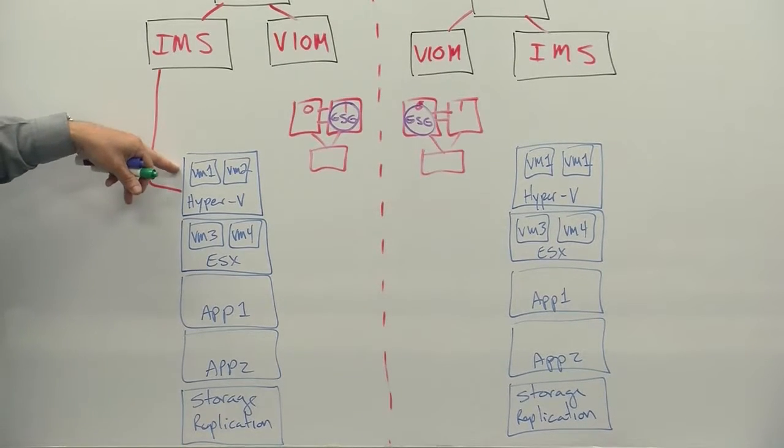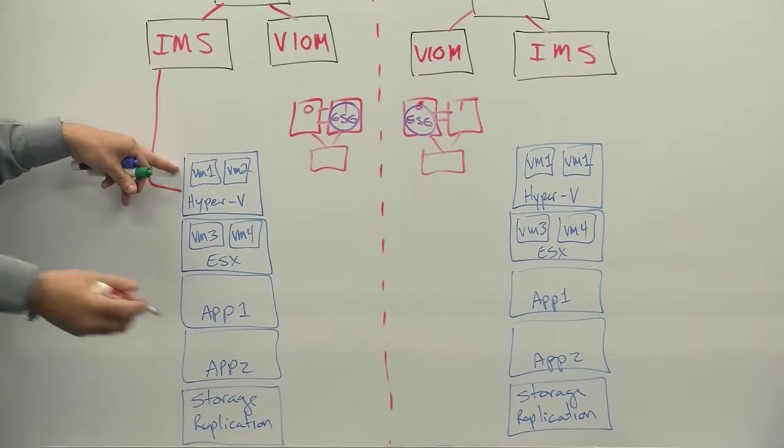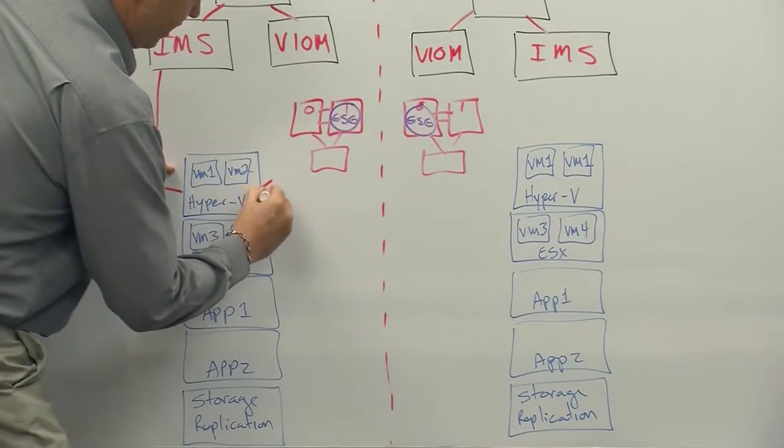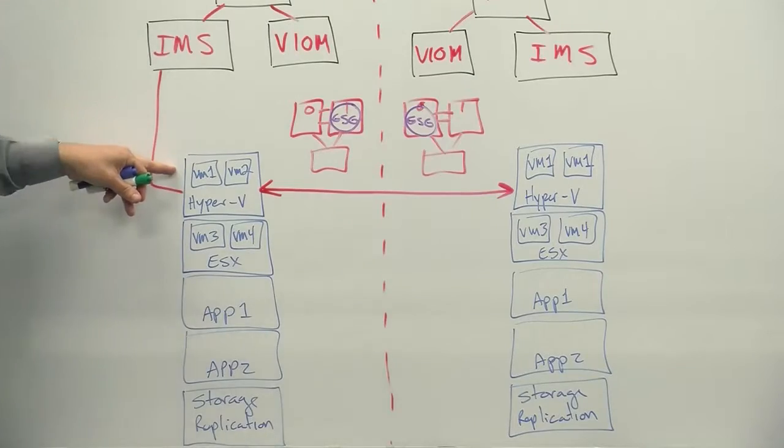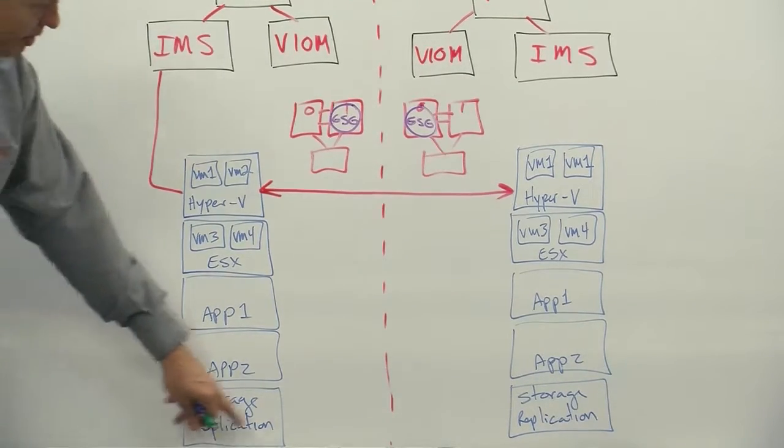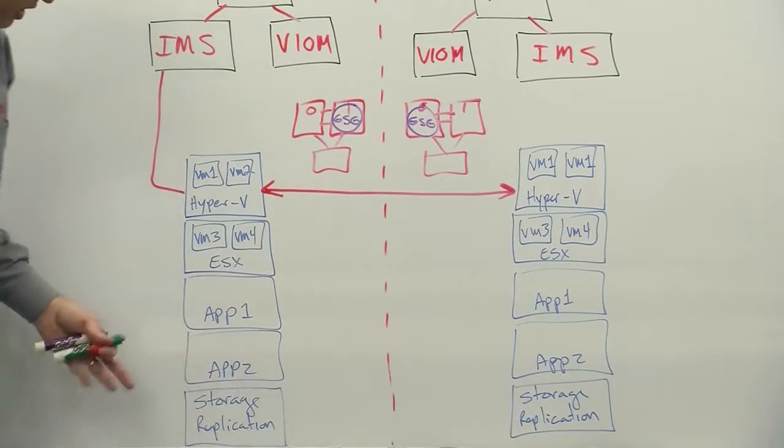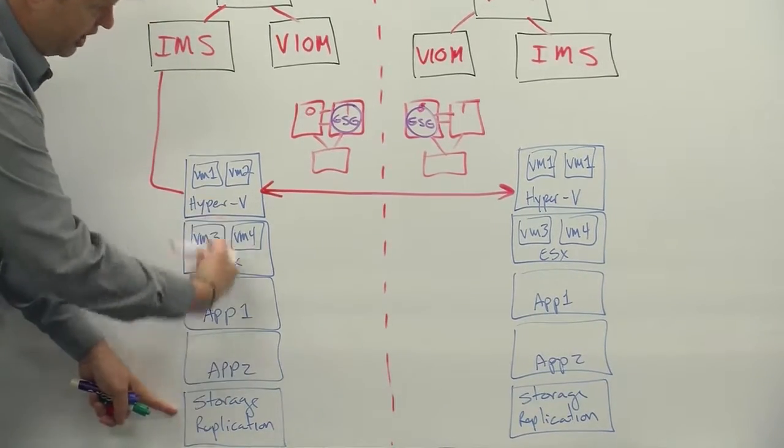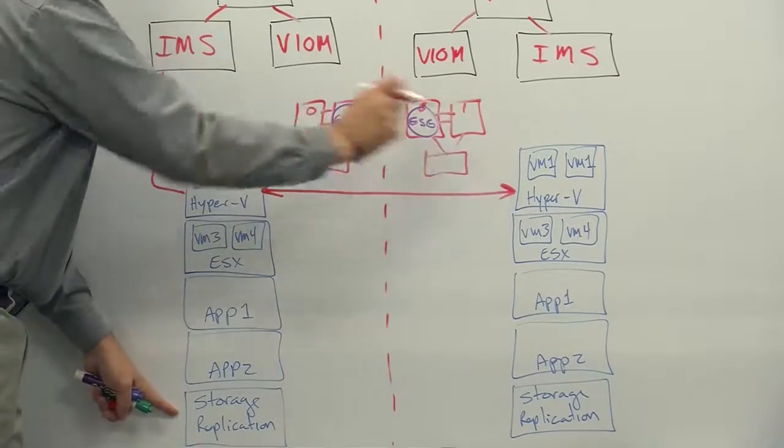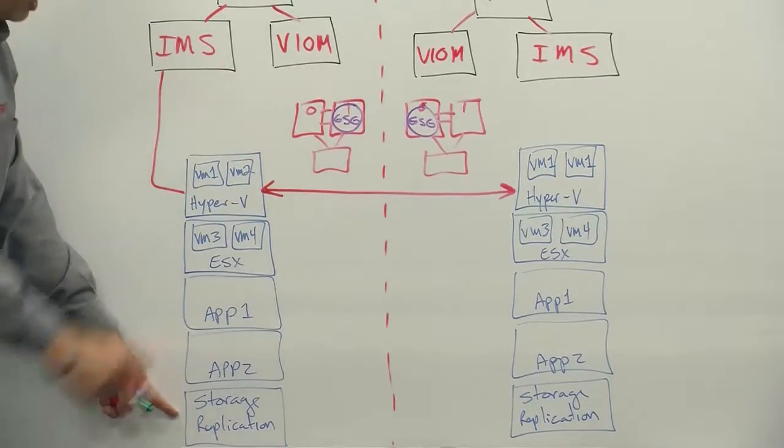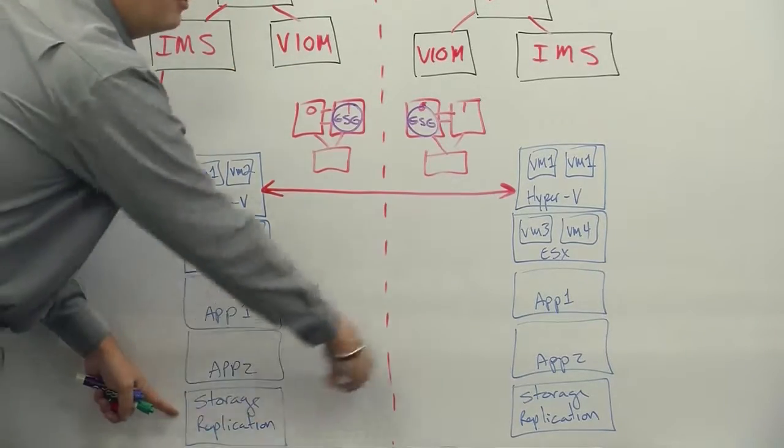So with Hyper-V, we support two types of replication. We support Hyper-V replica, which would be software replication, and you'll have that replicating between sites. We also support hardware replication. That's what I have down here, storage replication. But we're going to represent that all these components here are replicated to the other site, so that we can do migrations and takeovers. We need data at both sites.